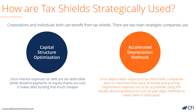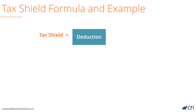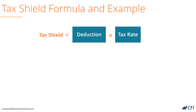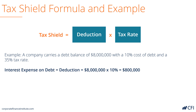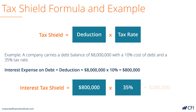Now let's look at some example calculations. The tax shield formula is equal to the deduction times the tax rate. Here's an example: a company has a debt balance of $8 million with a 10% coupon or interest rate on that debt and a 35% tax rate. The interest expense on the debt is the deduction, which is $8 million times 10%, equal to $800,000. So the interest tax shield is $800,000 times 35%, which equals $280,000 in just that one single year.